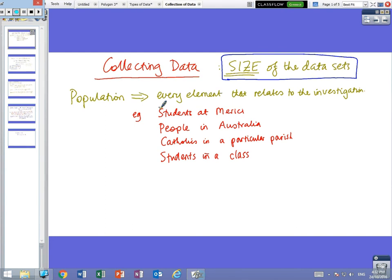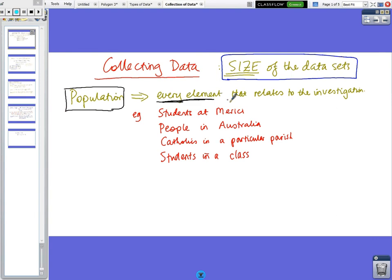Okay, so the first one that we're looking at is what we call a population. So the population is every element that relates to the investigation. Now that might be, if we're looking at things at school, it might be all the students at Marici.